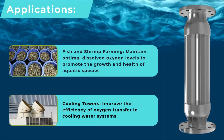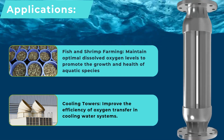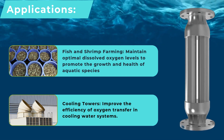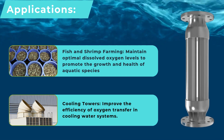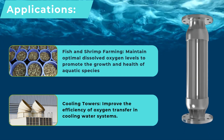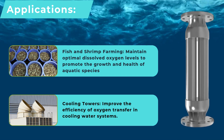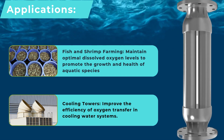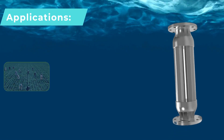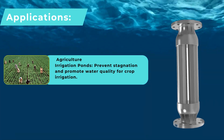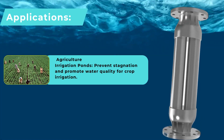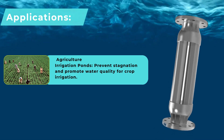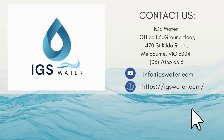Applications: Fish and shrimp farming — maintain optimal dissolved oxygen levels to promote the growth and health of aquatic species. Cooling towers — improve the efficiency of oxygen transfer in cooling water systems. Agriculture irrigation ponds — prevent stagnation and promote water quality for crop irrigation.